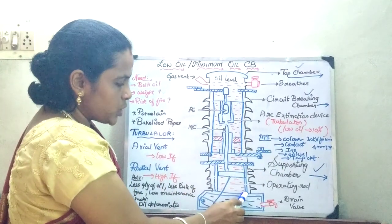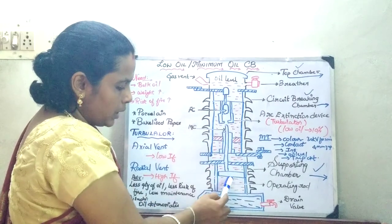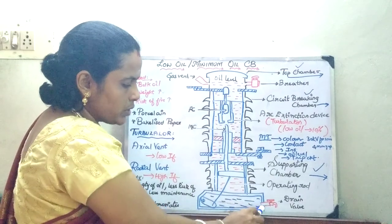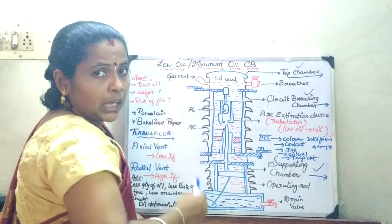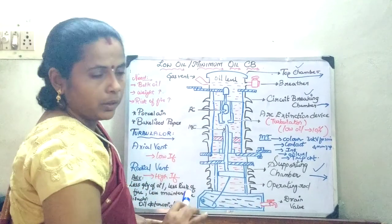So this supporting chamber houses your moving contact trip. This trip control alone gives on to your down chamber which has a drain valve. That is, if the oil is going to get deteriorated, after sometime it will get drained through this.